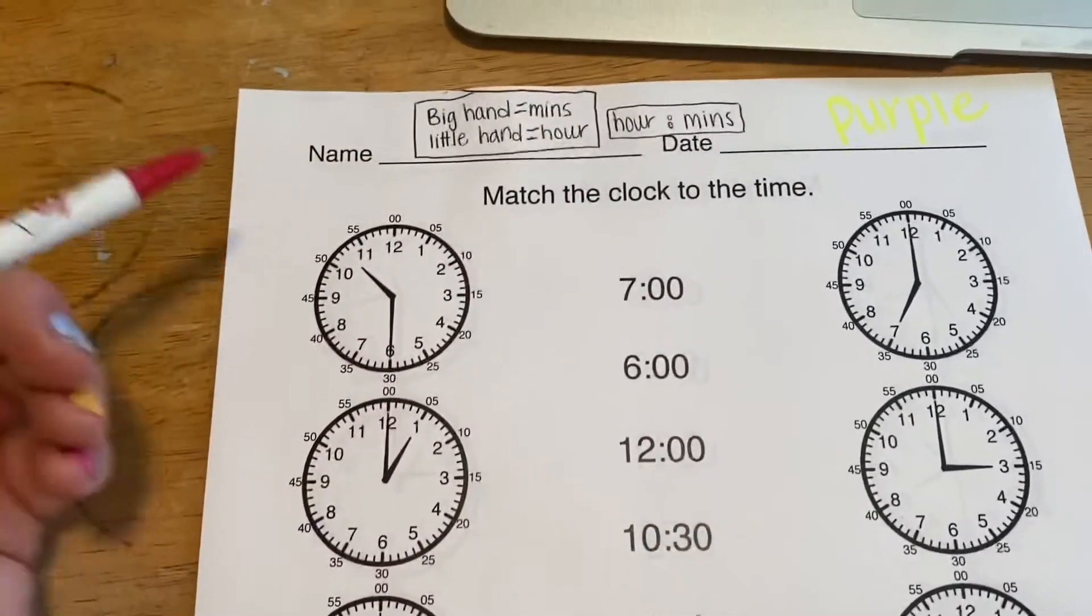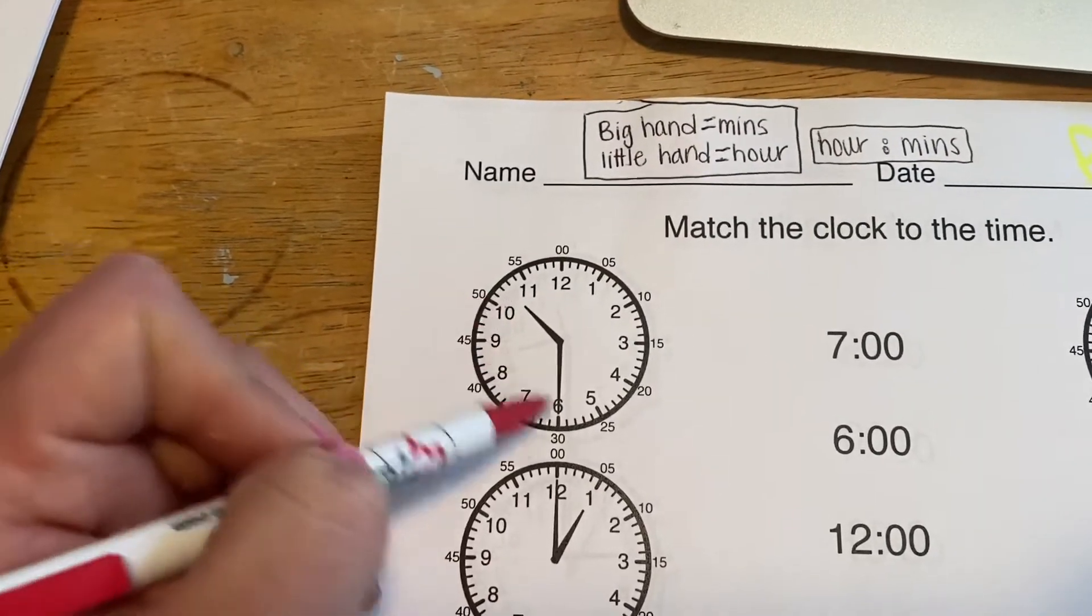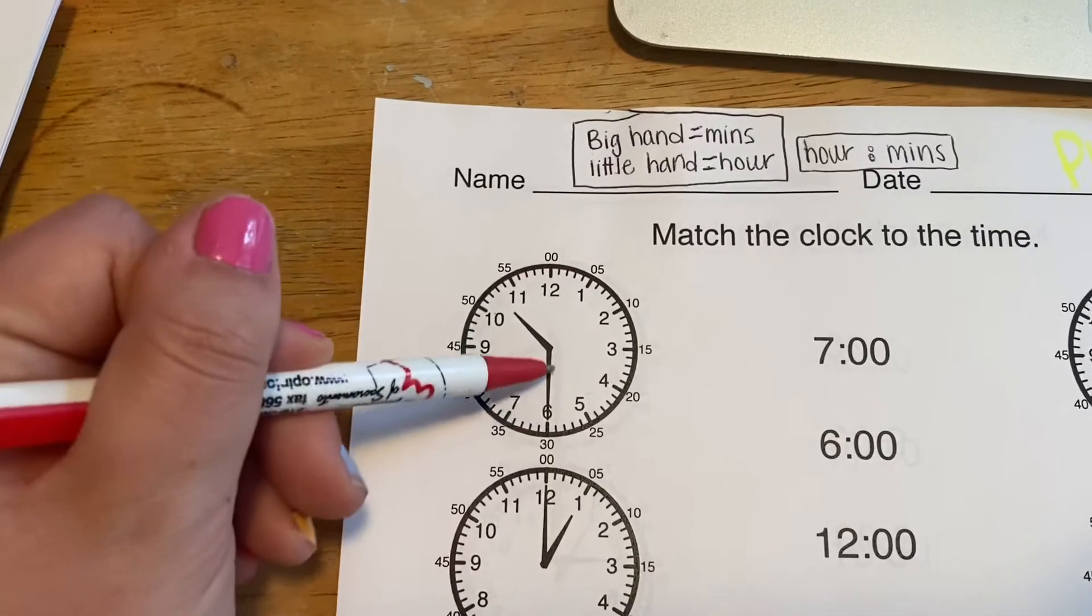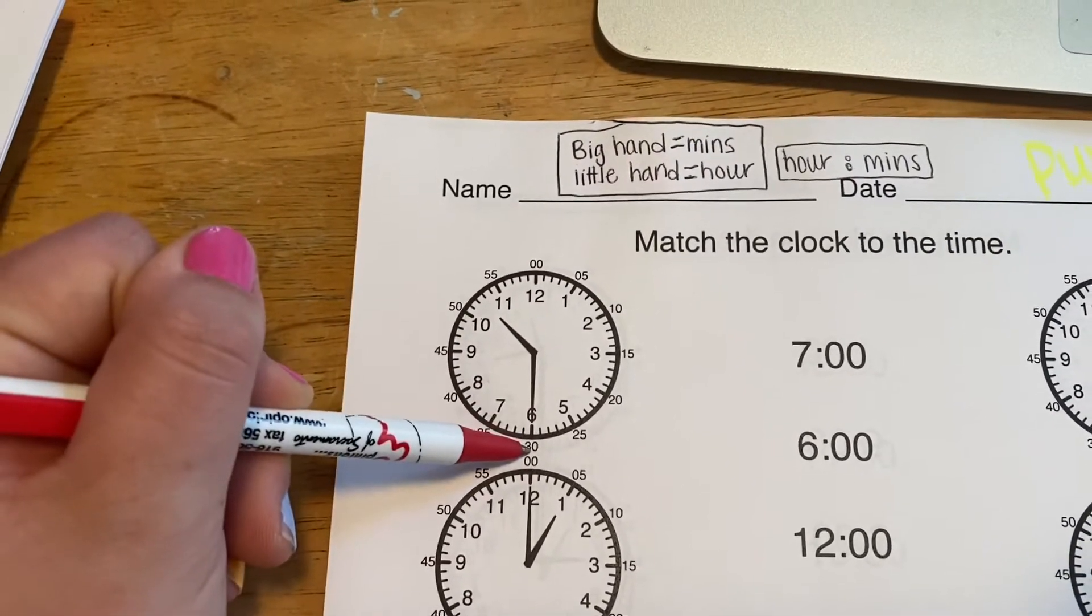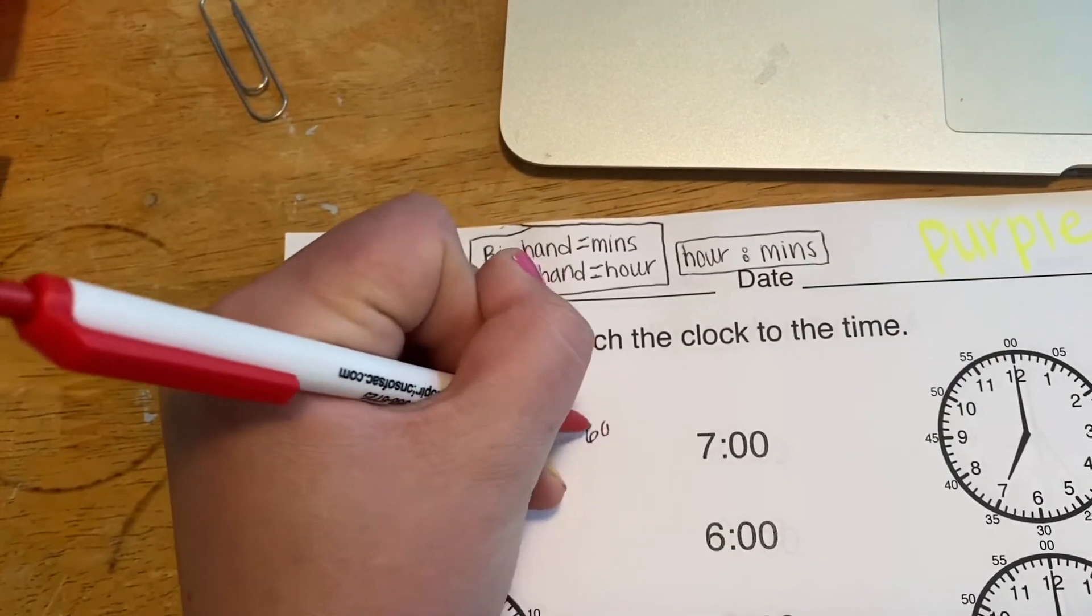So we'll do the first one together. If we look right here, we always look at the big hand first. So the big hand is pointing to the six and it's minutes, so it's actually 30. So I can write 30.